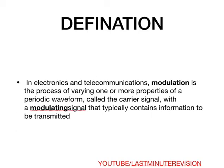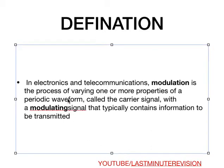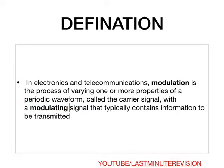The definition for modulation: according to Wikipedia, in electronics and telecommunication, modulation is the process of varying one or more properties of a periodic waveform called the carrier signal with a modulating signal that typically contains information to be transmitted. So it's a combination of a modulating signal and a carrier signal.